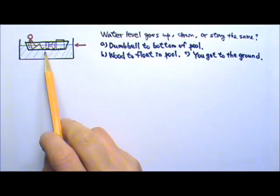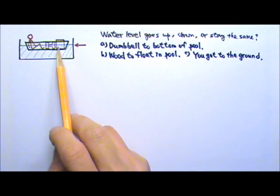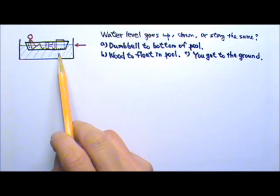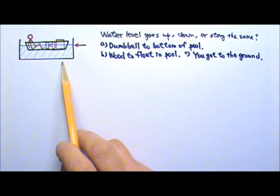Let's say you, a heavy dumbbell, and a big block of wood are together in a very small boat, and this very small boat is floating in a very small pool.